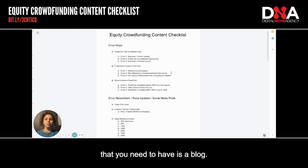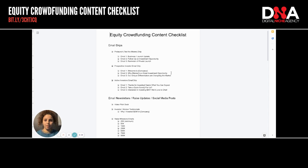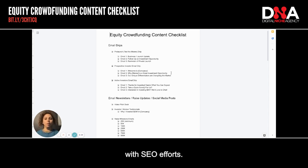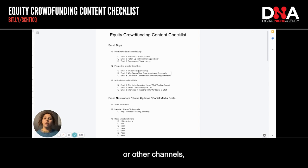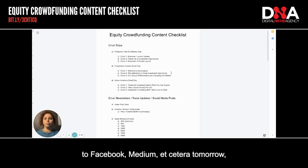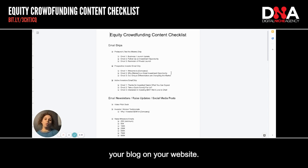Your third channel is a blog, and it needs to live on your website. The blog will help over time with SEO efforts. However, it needs to be a place where your larger pieces of information can live. Why on your website? If you're posting on Medium or other channels, you don't own that channel. If something happens to Facebook, Medium, etc., tomorrow, you might lose all of that content. So it's important that you house your blog on your website.